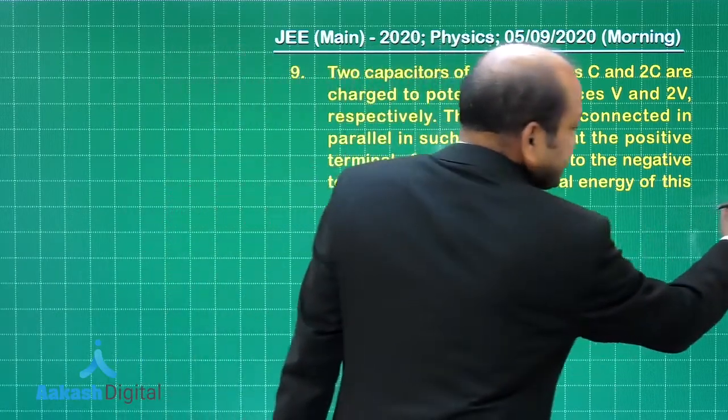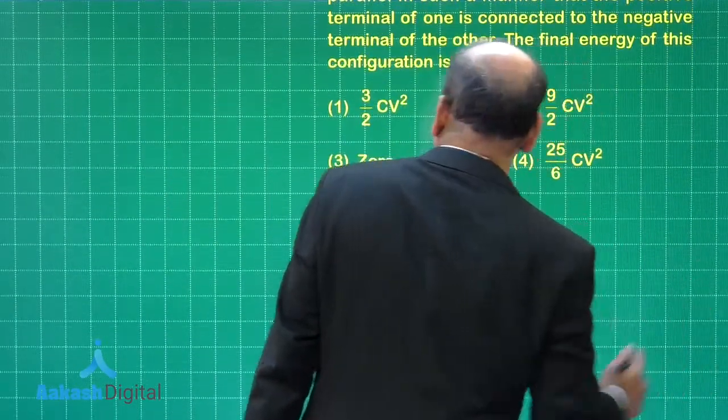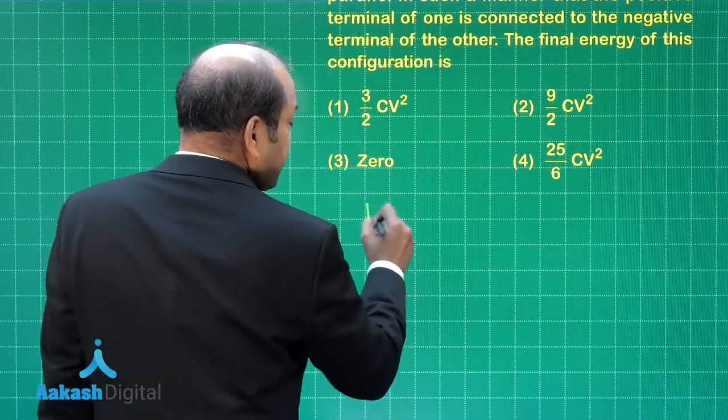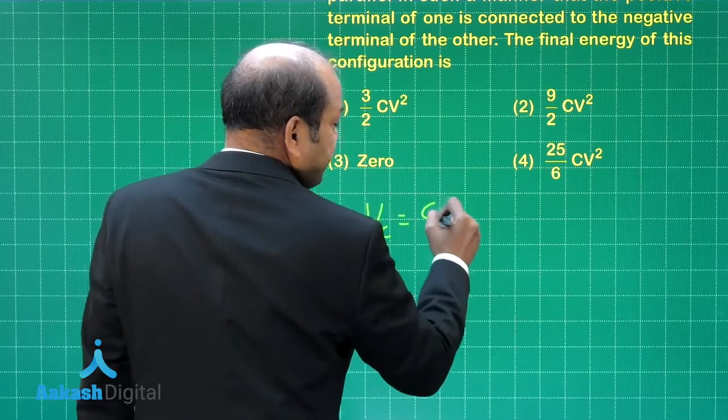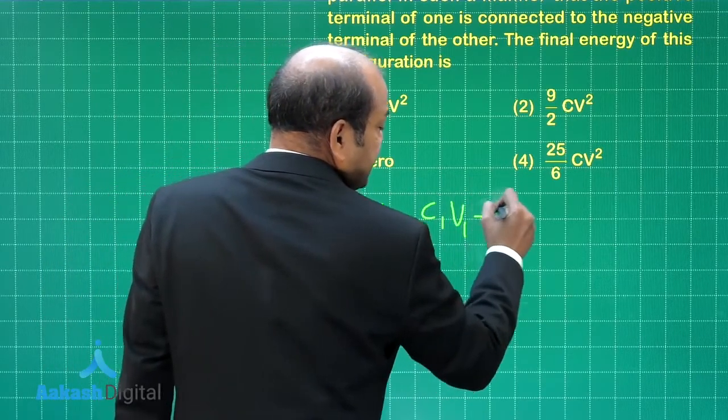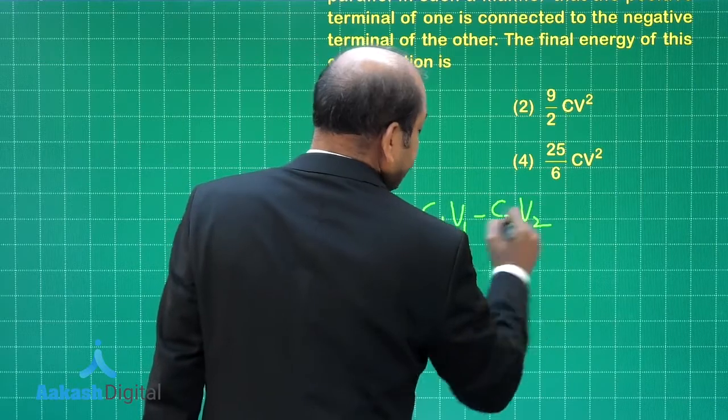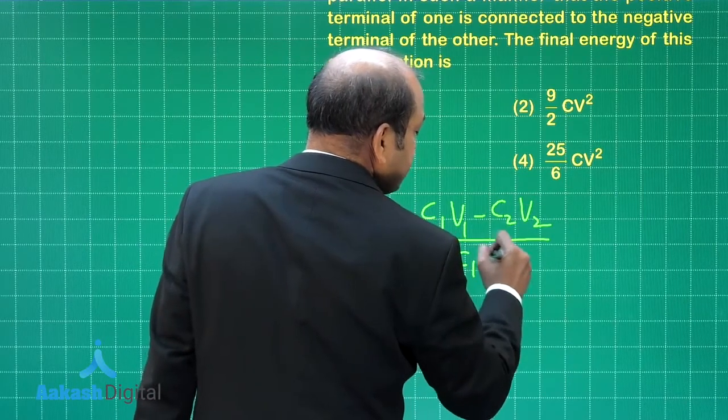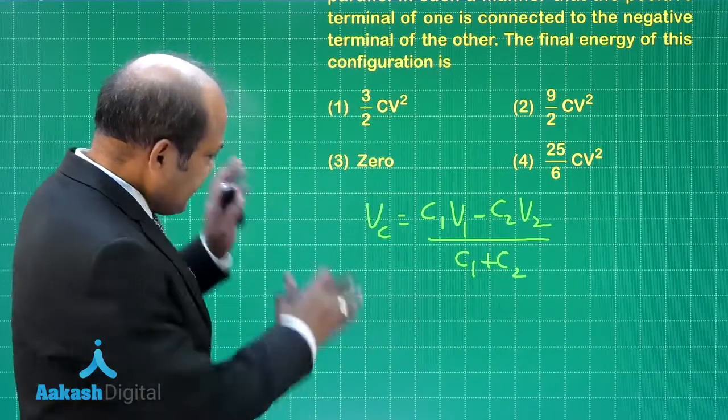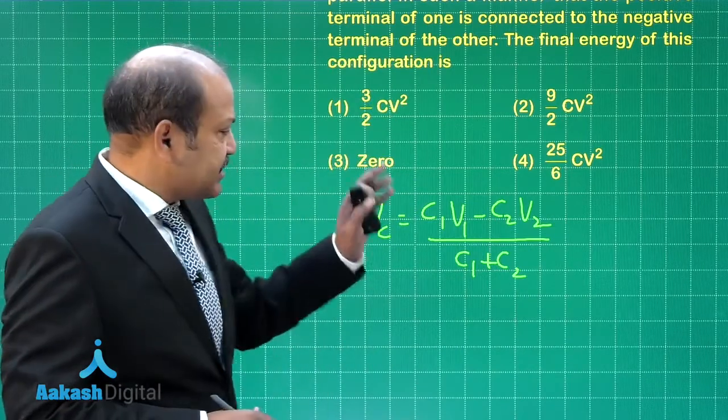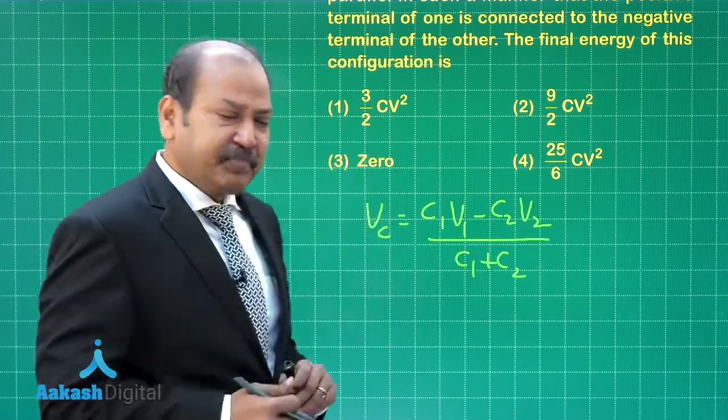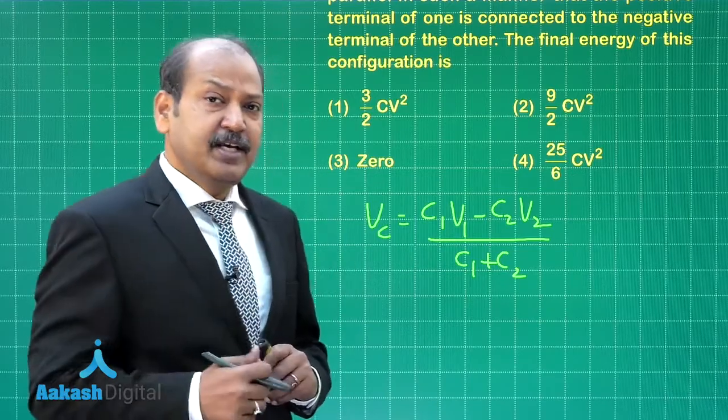So the expression for the common potential in such a case we can write as, you know, V common is C₁V₁ minus C₂V₂ divided by the total capacitance which is C₁ plus C₂. Let us keep this as positive. So let us take C₁ as 2C and that means V₁ is 2V. So we have 2C into 2V, that means 4CV.